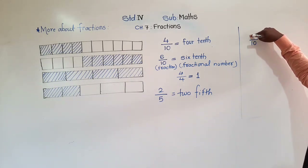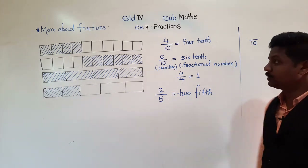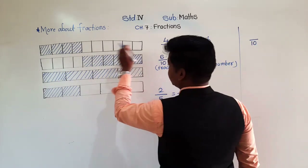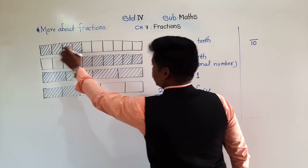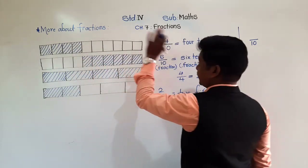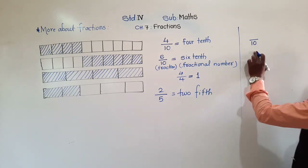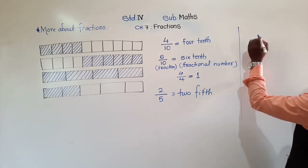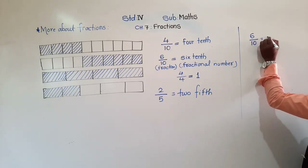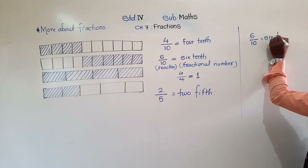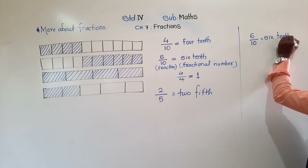Now we have to write the fraction for the unshaded parts. Count the parts which are not shaded: 1, 2, 3, 4, 5, 6. Four parts are shaded and 6 parts are not shaded. So if you want to write the fraction for the unshaded parts, write 6 above the bar. That is 6 tenths.